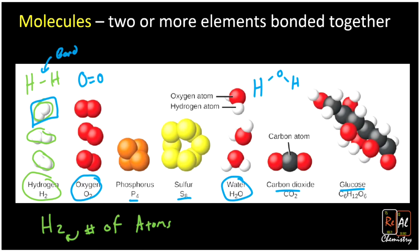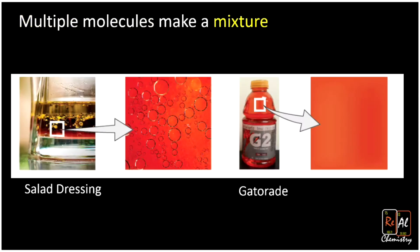If I have a cup of water, that's a pure substance — it's just all water. But most things are a mixture. When we combine more than two different molecules together, we get a mixture. Here are two everyday examples: salad dressing, which is a mixture of vinegar and oil, and Gatorade, which is a mixture of water, sugar, food coloring, and electrolytes. Mix those all together and you get Gatorade. So those are mixtures — multiple molecules together.